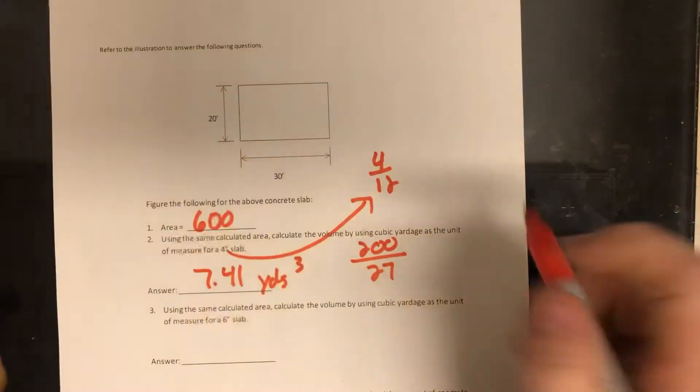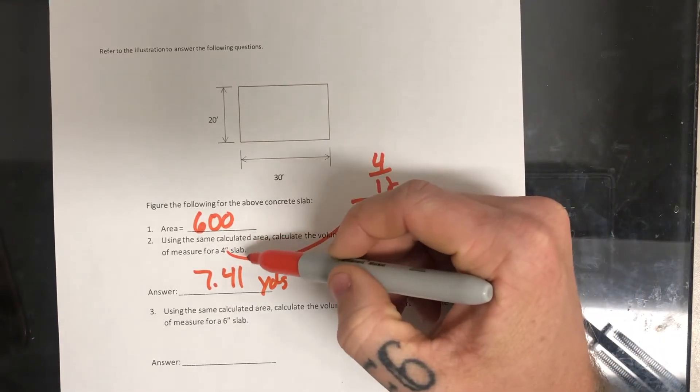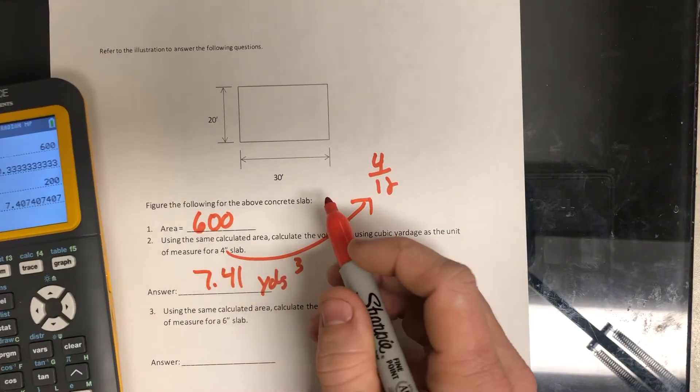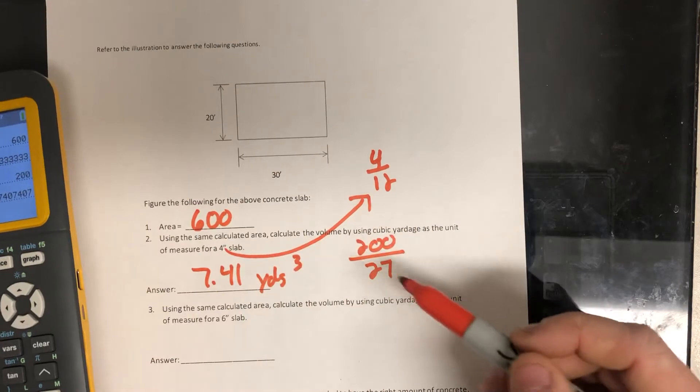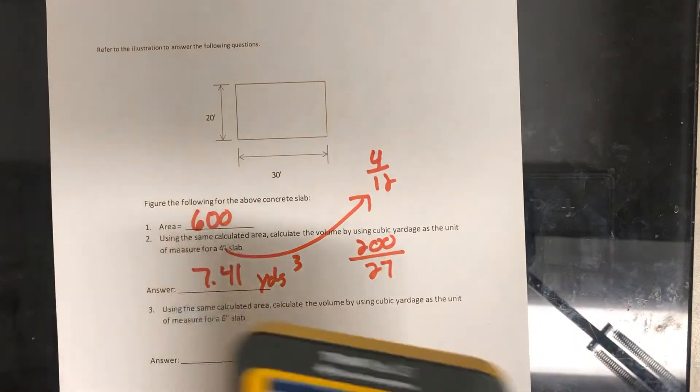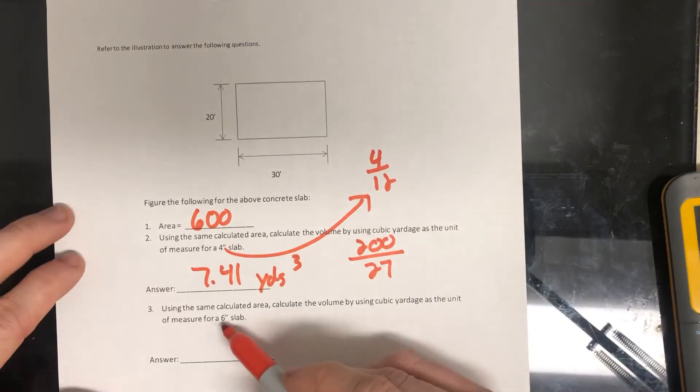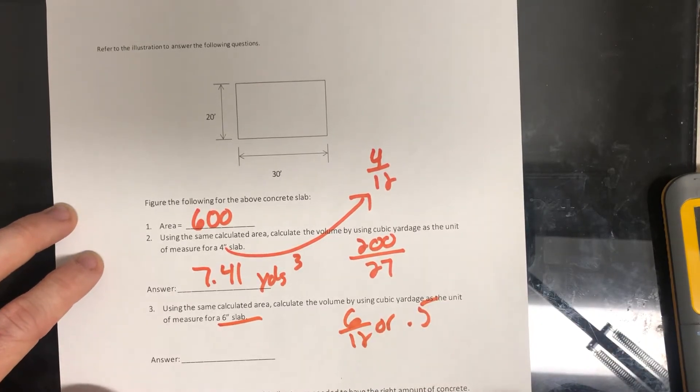So the area was 20 times 30. That's what goes here. That's just the area. And then they want to find cubic yardage. So to find the cubic yardage, we have to include the thickness. All right, so 600 times four over 12, and then divide it by 27. That's where that would come from. All right, so then what we're going to do, I'm going to skip the six inch because you guys could do that. This is just going to be six divided by 12 or 0.5 times whatever your area is. So that's pretty simple.